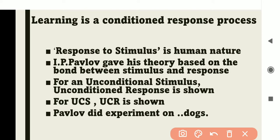So learners, please learn this abbreviation: UCS stands for Unconditioned Stimulus and UCR stands for Unconditioned Response. Pavlov did his experiment on a dog — similarly what happens with humans happens with animals also. Pavlov ka manna tha ki jaise aag ke paas khade aap turant hat jaate hain, ya garam tava choo lete hain toh aap haath hata lete hain. So we need to understand the experiment Pavlov conducted.